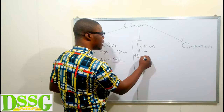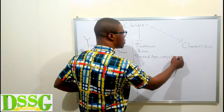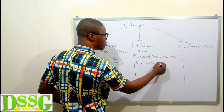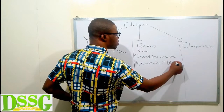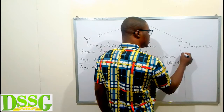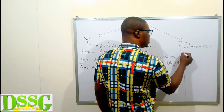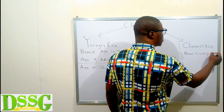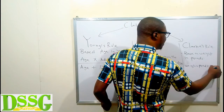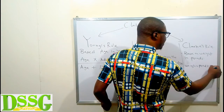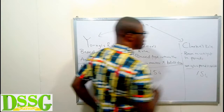Fried's Rule calculates dosage based on age in months. The formula is: age in months multiplied by the adult dose, all over 150. Clark's Rule calculates dosage based on weight in pounds — not kilograms. The formula is: weight in pounds multiplied by the adult dose, all over 150.